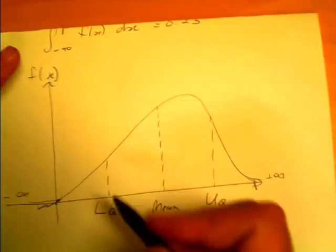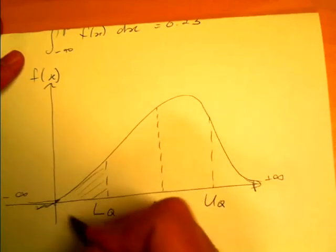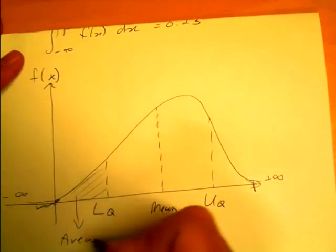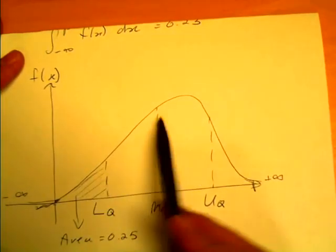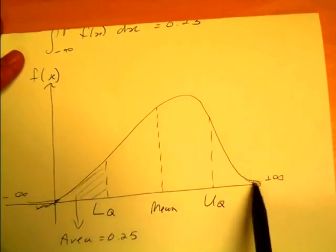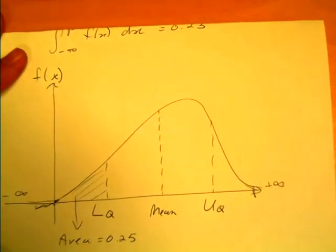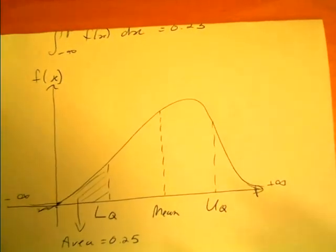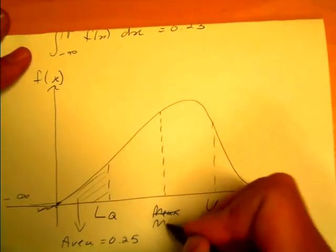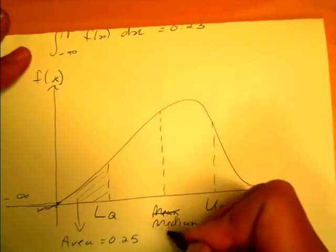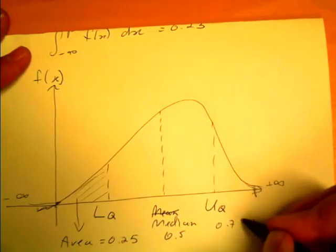So if we're interested in a lower quartile, we'd want to find where that area is equal to 0.25 because we know if we sum the area underneath the probability density function for a continuous random variable, it's going to add up to 1 always. So 0.25 is 25% of 1, sorry that should be median 0.5, upper quartile 0.75.